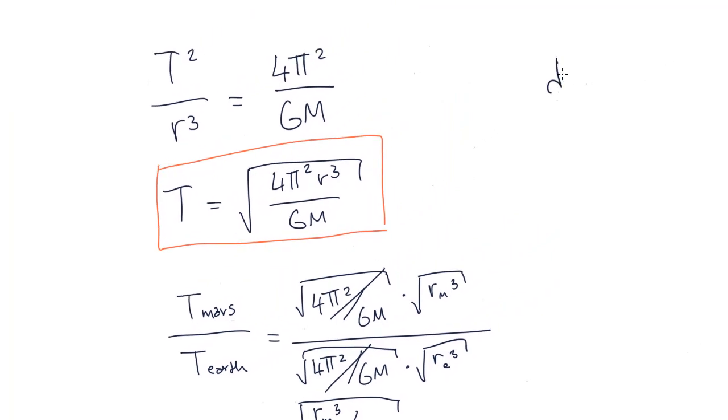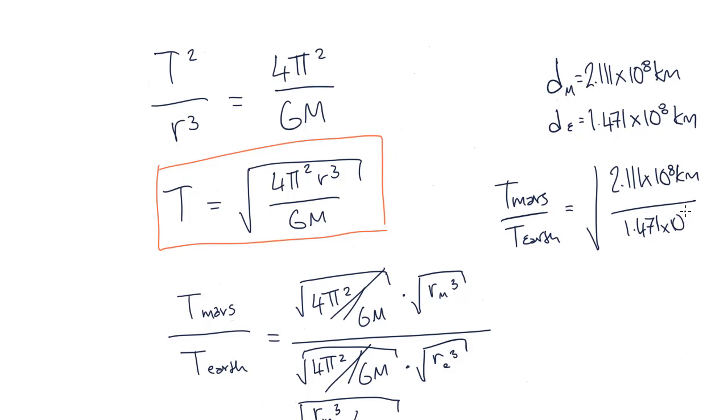We've already been given the radius of Mars's uniform circular motion, which is the distance from Mars to the Sun, which is equal to 2.111 times 10 to the 8 kilometers. The distance from Earth to the Sun, which is the radius of Earth's orbit, is equal to 1.471 times 10 to the 8 kilometers. If we plug in these values to compare the period of Mars to the period of Earth, we find that the answer is 1.72 to 2 decimal places.